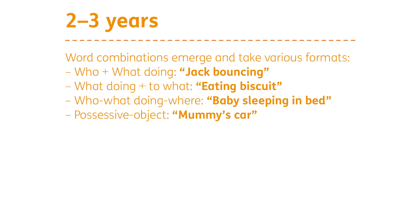Word combinations emerge and take various formats. First we get a WHO and a WHAT DOING, such as 'Jack bouncing' or 'mummy eating.' We also get a WHAT DOING and a TO WHAT — an action word and a naming word — so 'eating a biscuit' or 'drinking juice.' Then we get extended sentences: WHO, WHAT DOING, and WHERE — so 'a baby sleeping in bed.' We also get the possessive — 'mummy's car' or 'baby's drink.' The central vocabulary is often an action word, and once a child acquires action words like sleeping and eating, that really opens up their ability to make word combinations.